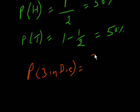The favorable number is one. The total number of events is six. So we will calculate 1 divided by 6. There is about a 16% chance of 3 coming in a die.